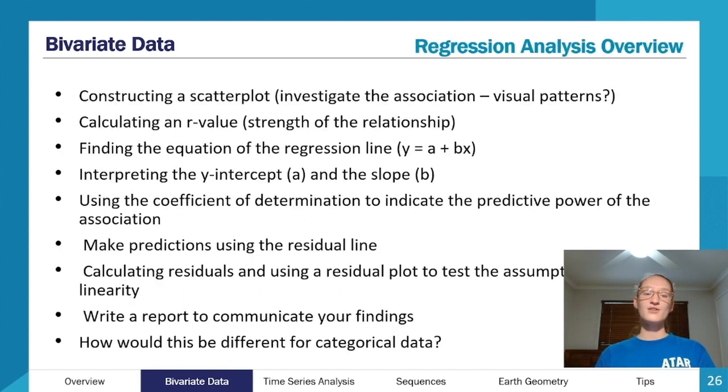A quick overview to sum up what we just talked about with our scatter plots and everything, which is actually called a regression analysis. You can see the awesome overarching pattern of why we do each step. We start out by constructing the scatter plot to see if visually can we actually identify if there's an association or a pattern present. Then we can calculate an r value to get that precise strength of the relationship, and that also tells us about the direction. From there we can calculate a least squares regression line, we can plot that on our scatter plot, we can interpret the y-intercept and the slope.